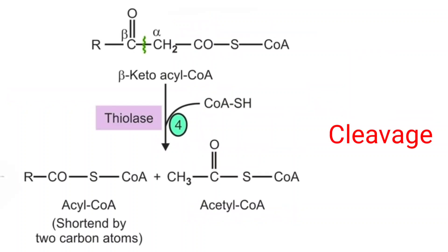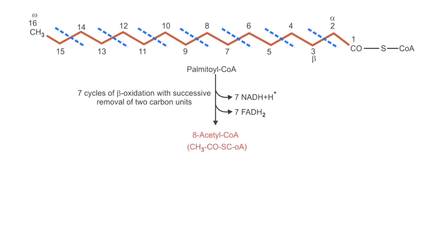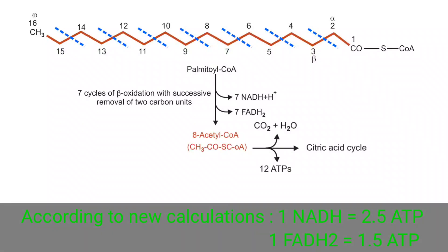The fourth step is thiolysis. The ketoacyl-CoA formed at the end of the second oxidation is cleaved by an enzyme called beta-ketothiolase, resulting in the formation of acetyl-CoA and a shortened fatty acyl-CoA chain. At the end of the first cycle, two carbons are removed as acetyl-CoA, and the remaining fatty acyl-CoA is again subjected to oxidation, hydration, oxidation, and thiolysis. These cyclic reactions repeat until all carbons are removed as acetyl-CoA, which then enters the citric acid cycle where it is further oxidized to produce ATP.